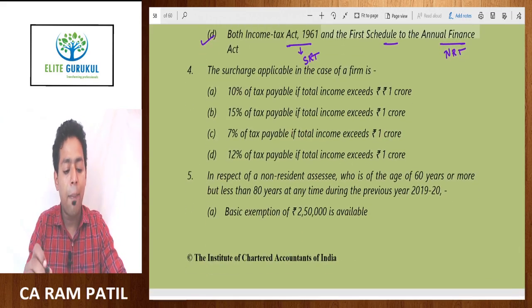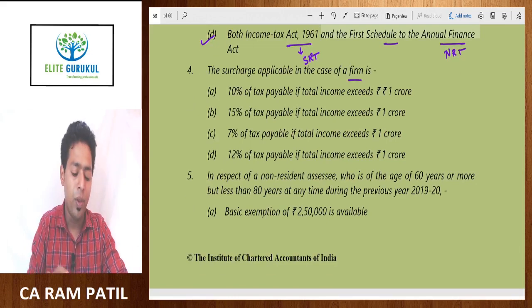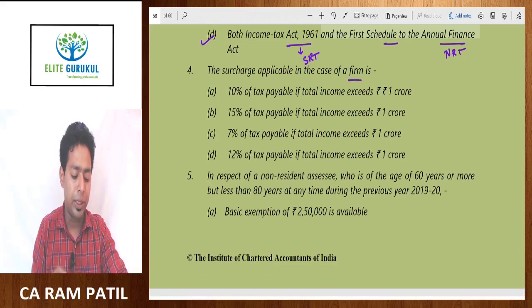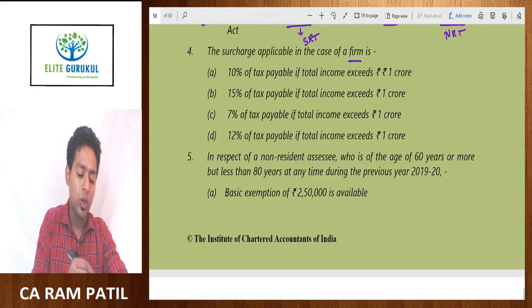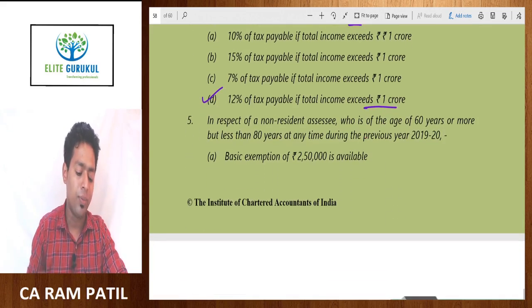The surcharge applicable in case of a firm — a partnership firm — is: up to 1 crore, no surcharge; after 1 crore, 12% surcharge. So the answer is: after 1 crore, 12% surcharge.